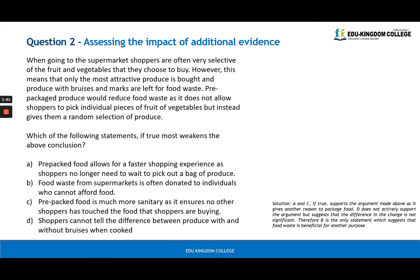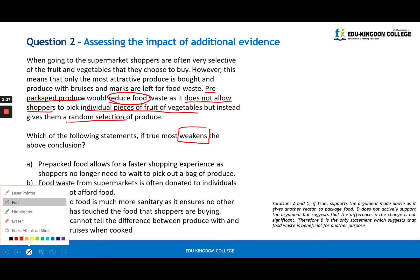Assessing the impact of additional evidence. If we look at the information provided, the main conclusion is that prepackaged produce in supermarkets would reduce food waste as it does not allow shoppers to pick individual pieces of food and vegetables, but gives them a random selection. We want to find something that weakens this argument that prepackaged food makes less waste.